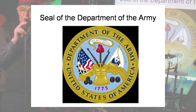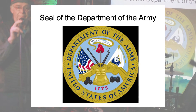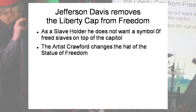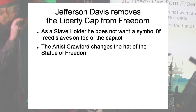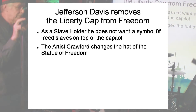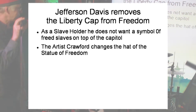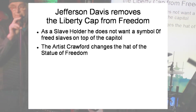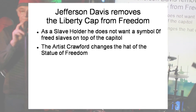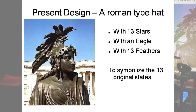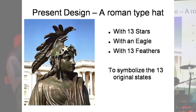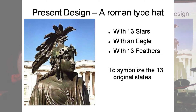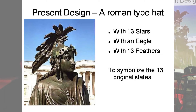Here is the official seal of the United States Army. Jefferson Davis removed the Phrygian cap, and as a slave holder, of course, he did not want that symbol on top of the Capitol. The artist Crawford had to change the hat of the Statue of Freedom. So this is what it looks like: a Roman-type hat with 13 stars and an eagle with 13 feathers, symbolizing the 13 original states.